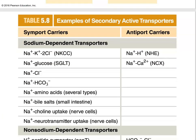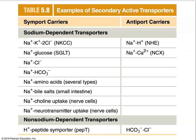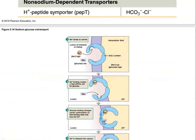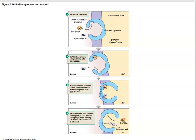Here are some examples of secondary active transporters — I call this the 'buy one, get one free' deal, where you're actively transporting one item and a second item hitches a free ride. We'll talk more about these when we get to the digestive system. Here, the sodium-glucose co-transporter: sodium and glucose load up together as a symport going in the same direction, and then we open on the other side and let both out.